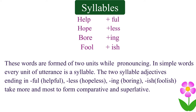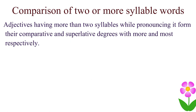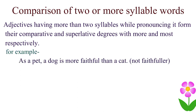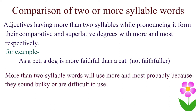Two-syllable adjectives ending in -ful, -less, -ing, or -ish take more and most to form their comparative and superlative degrees. Adjectives having more than two syllables form their comparative and superlative degrees with more and most respectively. For example: as a pet, a dog is more faithful than a cat. Words with more than two syllables use more and most probably because they sound bulky or are difficult to pronounce with -ER and -EST.